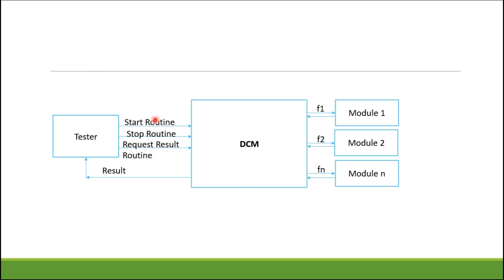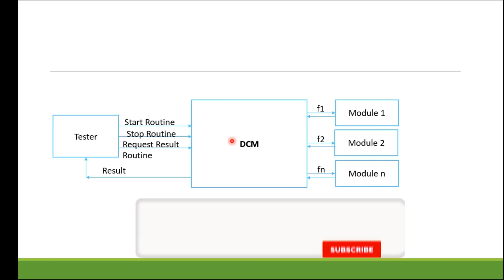Here is a simple block diagram. We have the tester or client, the DCM (Diagnostic Communication Manager), and modules 1, 2, and so on — these can be considered as actual tests. The tester or client requests a start routine to perform some action. DCM then validates some preconditions and sessions, starts the routine, and activates the corresponding flag — either flag 1, flag 2, or flag N.